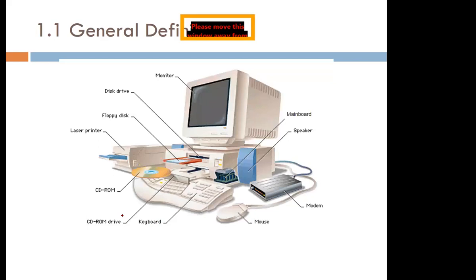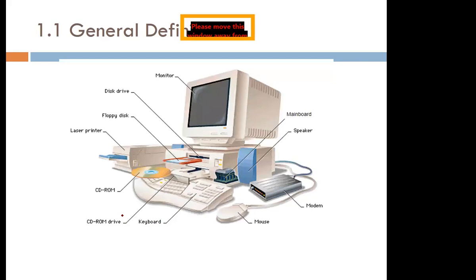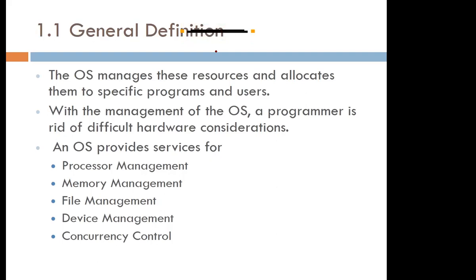The user uses a mouse, a modem, a keyboard, a CD-ROM drive, laser printers, and the monitor, but doesn't have to know what happens when they click a mouse. All they need to know is: if I click a mouse, I should be doing this type of action. Whatever electric signal passes from the mouse until it appears on screen is hidden from the user by the operating system.